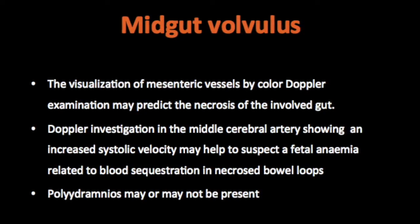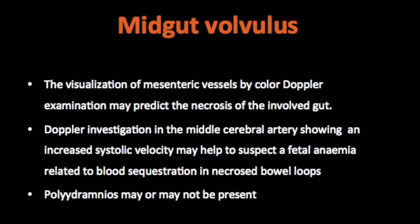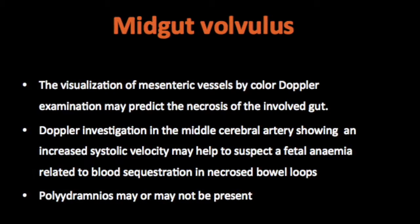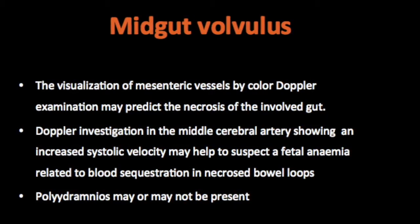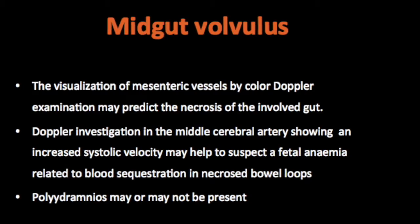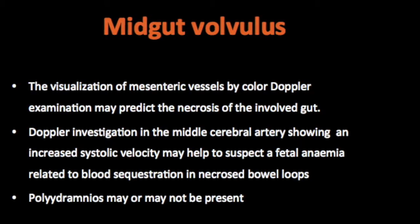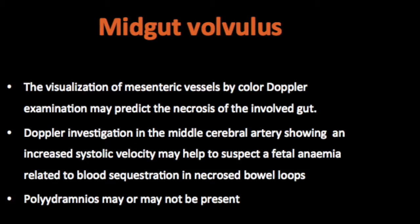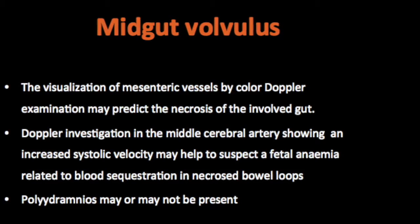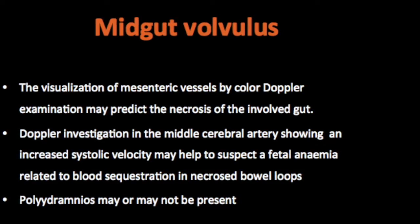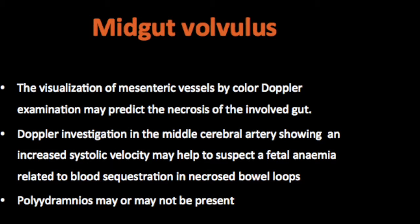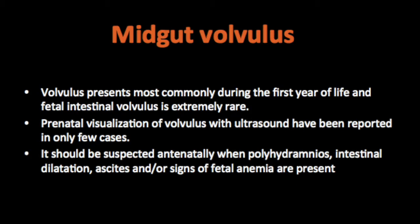The visualization of the mesenteric vessels by colour Doppler examination may predict necrosis of the involved gut. If the mesenteric vessels are not seen in the midline on colour Doppler, it tells us there are chances of necrosis of the bowel. The Doppler investigation of the middle cerebral artery showing increased systolic velocity helps us suspect fetal anemia related to blood sequestration in the necrotic bowel loops.